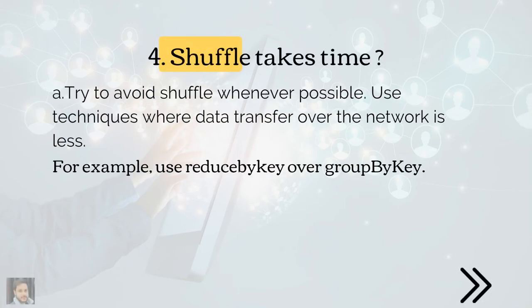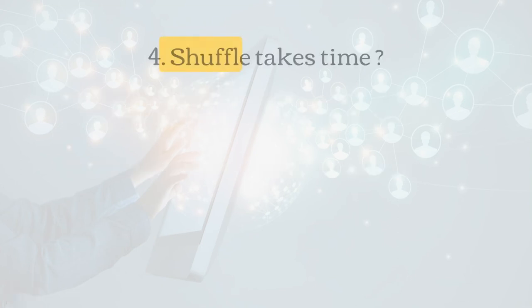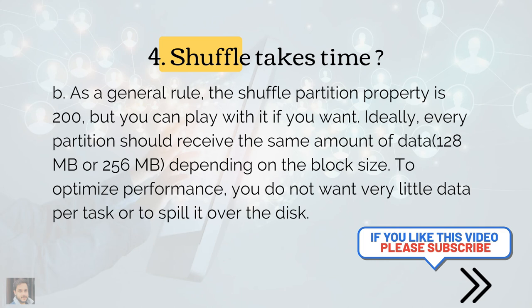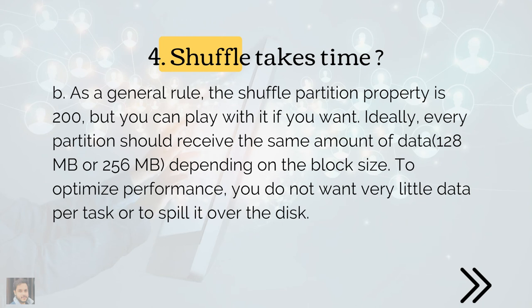Another scenario is the job taking a lot of time in shuffle — the most commonly found problem in almost every job. The first solution: avoid shuffle as much as you can, or use techniques that minimize data transfer over the network. For example, use reduceByKey over groupByKey. There are plenty of 'this vs. that' resources for Spark available online — let me know in the comments if you need that list. The second solution: the default shuffle partition property is set to 200 — try adjusting it so there's no spill to disk and tasks aren't underutilized. Keep partition sizes close to the input block size, which is 128 MB or 256 MB depending on your Hadoop distribution.